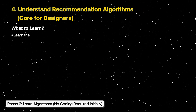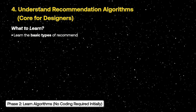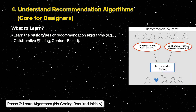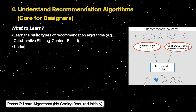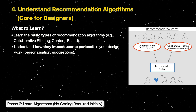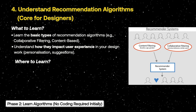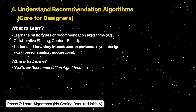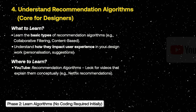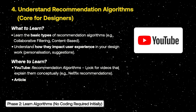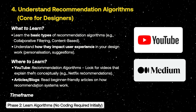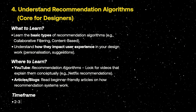The second part of phase 2: we will attempt more complex algorithms — recommendation algorithms, collaborative filters, and the impact on user experience. For the recommendation algorithm, there is a complex example in Netflix. You can check YouTube videos and read articles and blogs on Medium. Spend about 2-3 weeks on this.